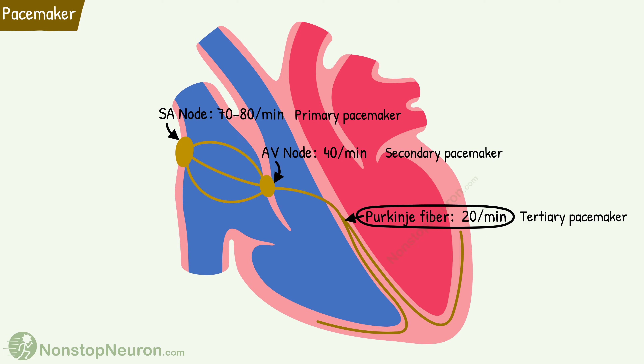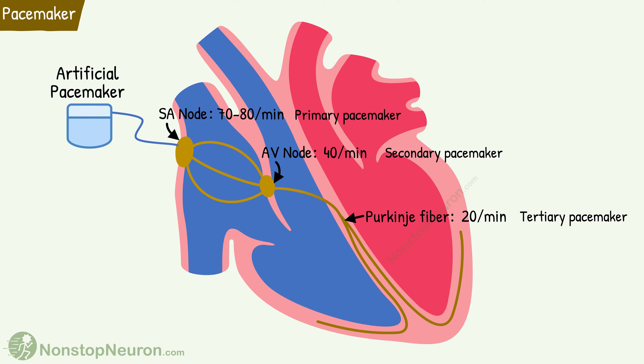However, Purkinje fibers are very slow and not reliable as a pacemaker. In certain conditions, these tissues cannot keep the heart beating properly. In that condition, we might need to implant an artificial pacemaker that provides the heart with impulses.